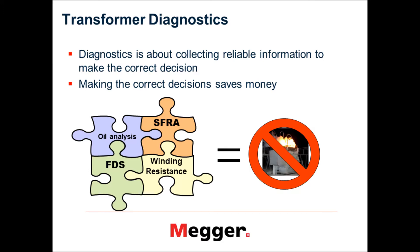When we talk about transformer diagnostic testing, we do a number of different tests. We do DGA, dissolve gas analysis, to find out the condition of the oil and presence of any arcing gases. We do TTR, turns ratio test, and winding resistance test to check the condition of the windings. Then we do different tests like power factor and insulation resistance to check the condition of the insulation.